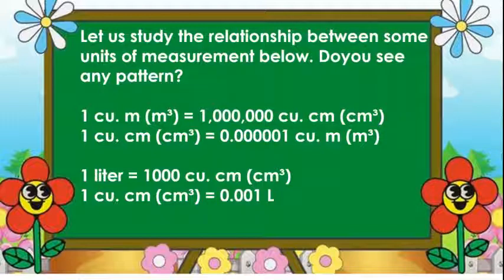Let us study the relationship between some units of measurement below. Do you see any pattern? 1 cubic meter is equal to 1,000,000 cubic centimeter, and 1 cubic centimeter is equal to 0.000001 cubic meters. While 1 liter is equal to 1,000 cubic centimeter, and 1 cubic centimeter is equal to 0.001 liters.